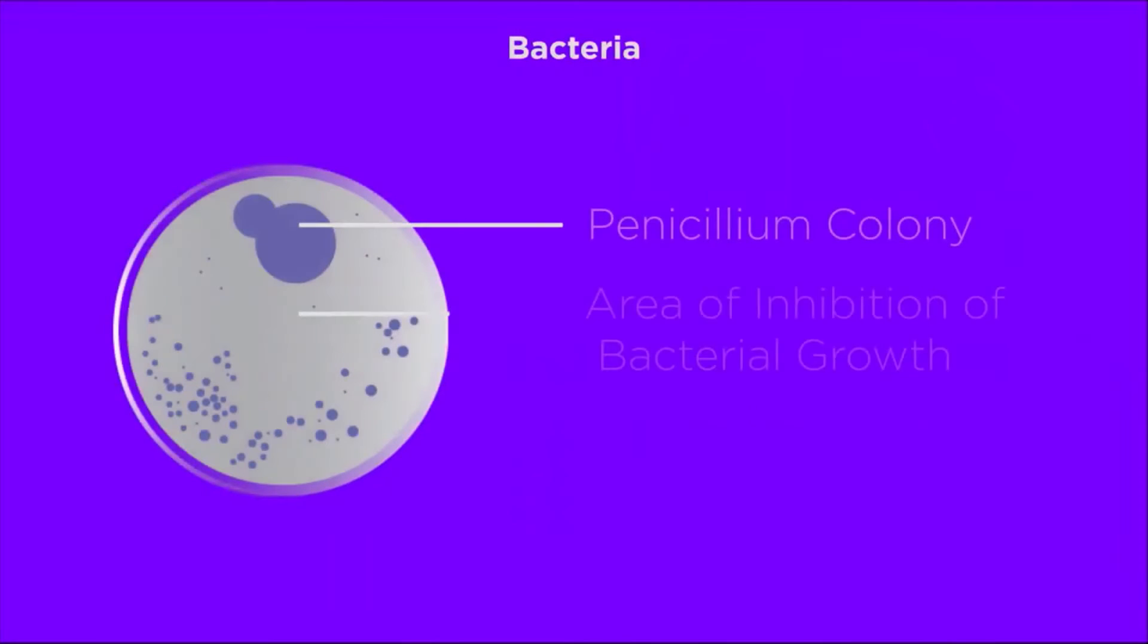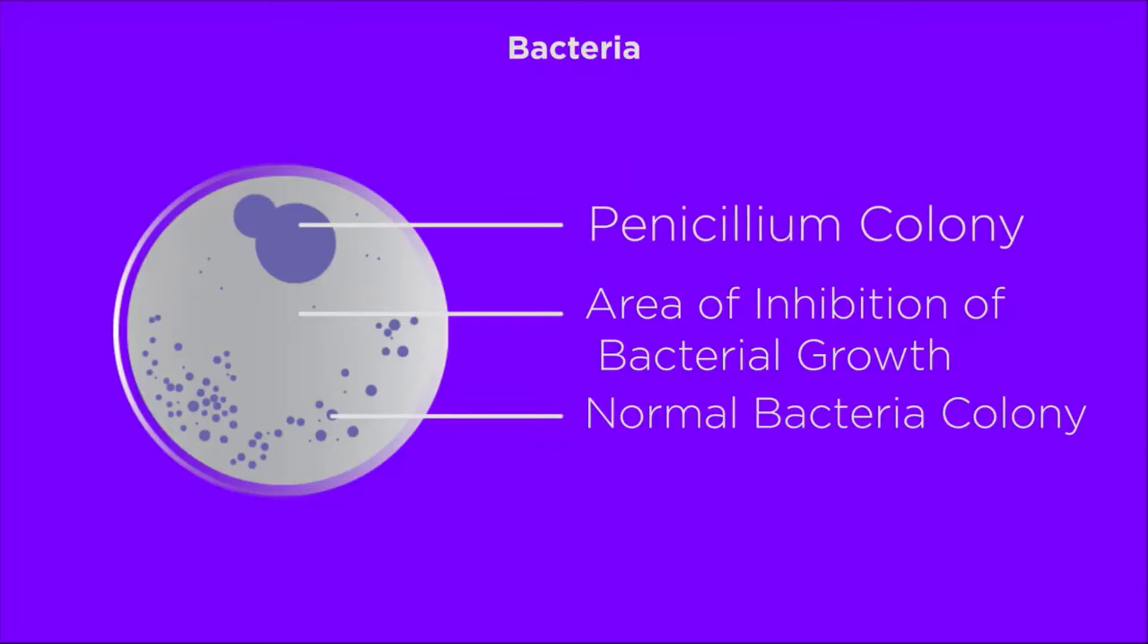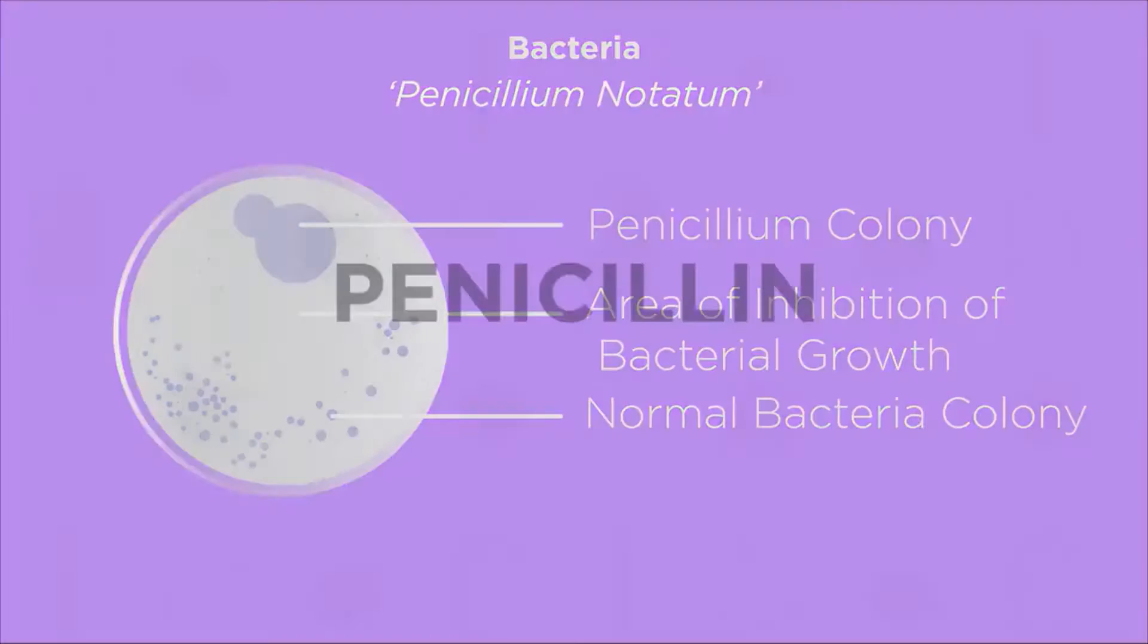The mold had created a bacteria-free circle around itself. The mold was the fungus Penicillium notatum. Fleming concluded that the bacteria on the plate had been killed off by a substance in the mold. Fleming named this active bacteria-killing substance penicillin.